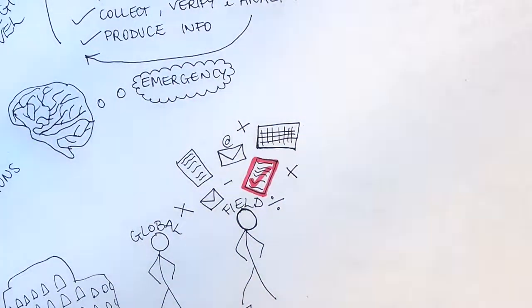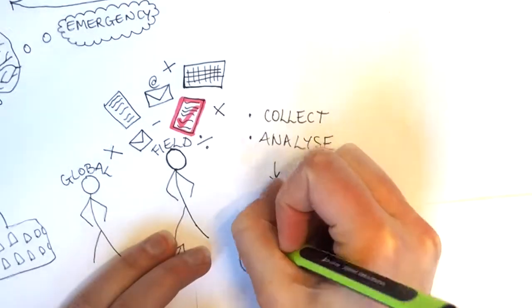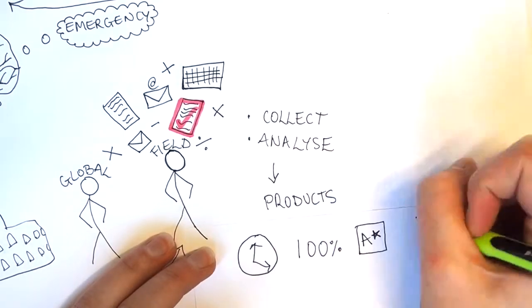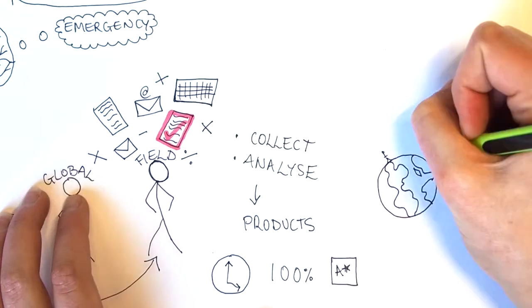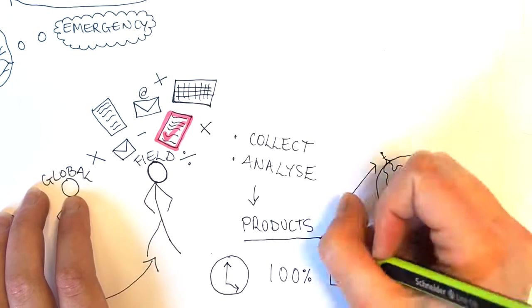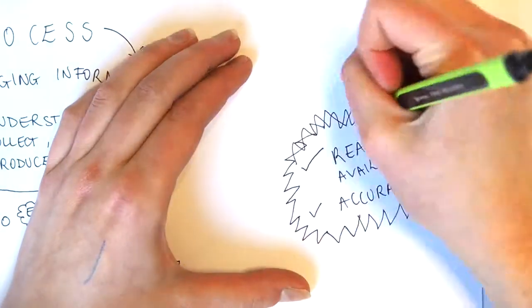Field IM officers collect and analyze operational information. They develop information products that are well-timed, accurate and high-quality. These are then disseminated to stakeholders in the humanitarian community. The goal of IM officers is to have information that is readily available and accurate for different audiences.